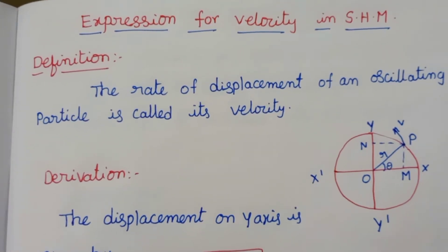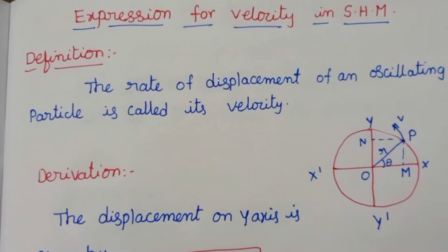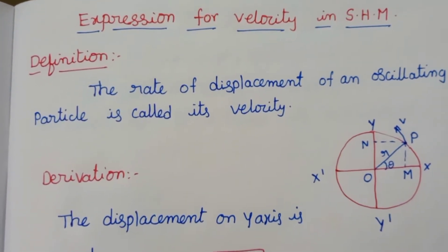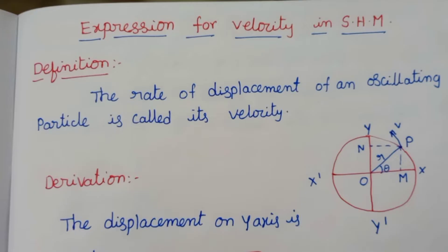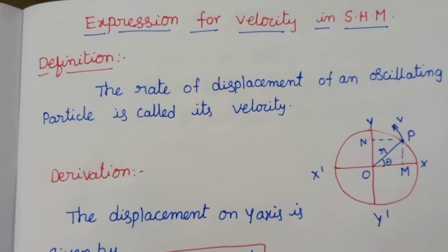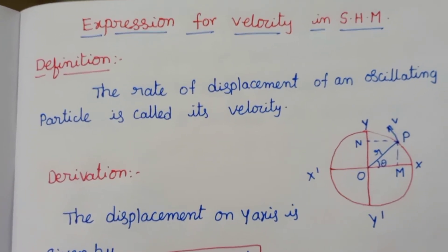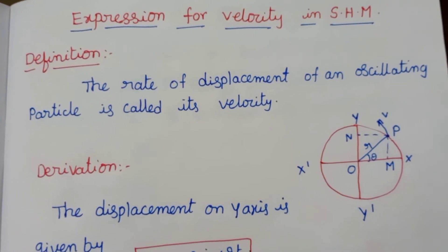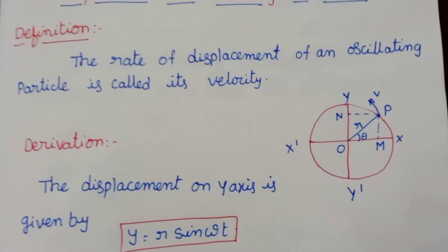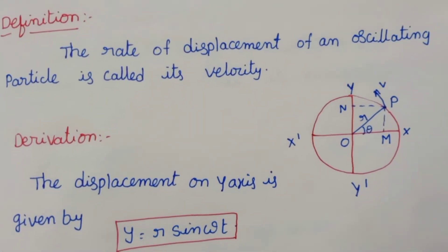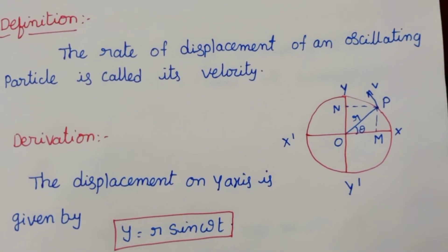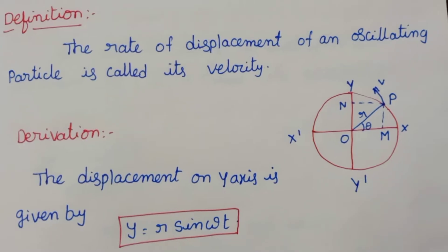The velocity is ds by dt. Here, the displacement is y, so dy by dt gives the velocity. Now let's look at the reference circle diagram.